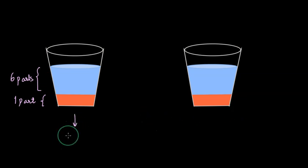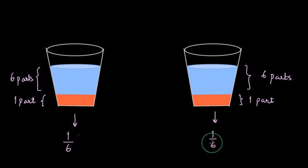This is your glass and the ratio of orange syrup to water is 1 by 6. Now you take another glass. Again you take one part orange syrup and six parts water, so you have another glass of the beverage where the ratio is 1 by 6.